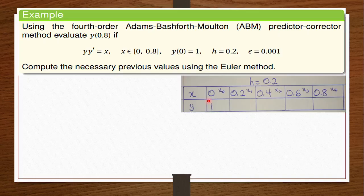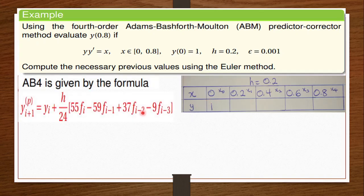Before we start the Adams-Bashforth-Moulton predictor-corrector method, we first have to use the Adams-Bashforth method. In the previous video we used Adams-Bashforth with Runge-Kutta; now we are using it with the Euler method. This is the formula for the fourth order Adams-Bashforth method — this is the predictor, which helps us predict a particular value.